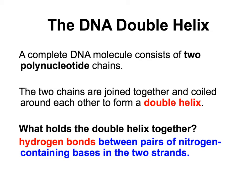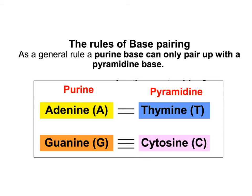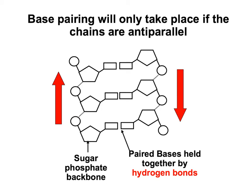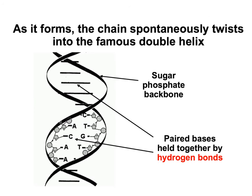DNA is a double-stranded molecule made up of two polynucleotide chains that are held by hydrogen bonds that form between complementary base pairs. In DNA, the base pairing rules are that adenine always base pairs with thymine, and guanine always base pairs with cytosine. There are always two hydrogen bonds between A and T, and three hydrogen bonds between C and G. In order for base pairing to take place, the two strands of DNA have to run in opposite directions — this means they are described as anti-parallel. The whole molecule then twists up to form the double helix.